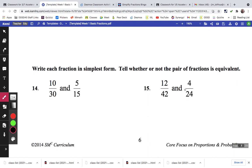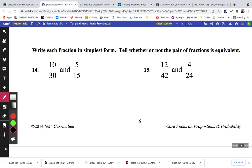Write each fraction in simplest form and tell whether or not the pair is equivalent. So again, I'm going to do 10 is 2 times 5. And 30 is equal to 2 times 3 times 5. Now we cancel the 2s and the 5s. So that's where we get 1 third.